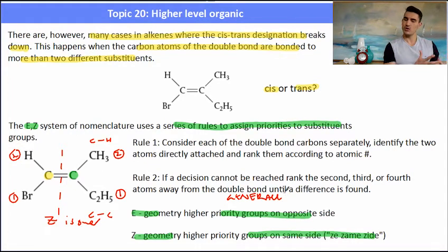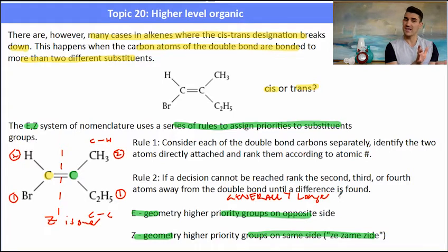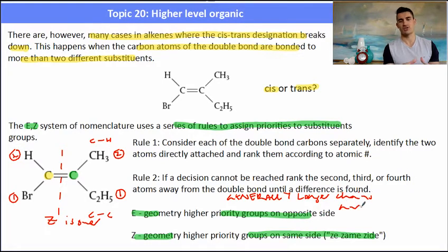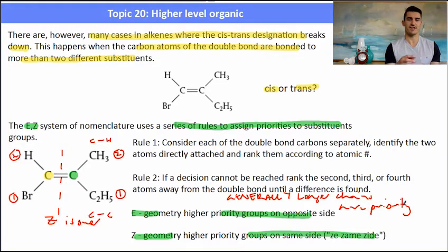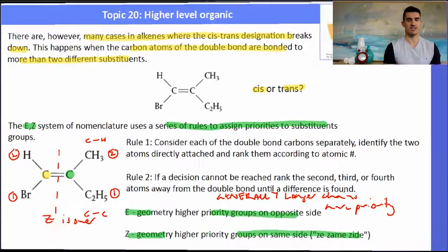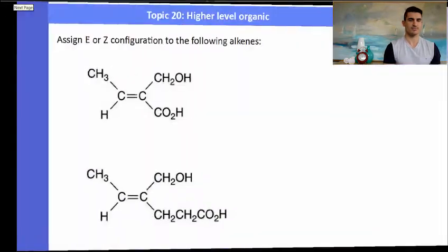A general rule when looking at things with different alkyl groups is that the longer chain generally has the higher priority. You just have to be a bit careful if there are other functional groups attached to that particular chain.